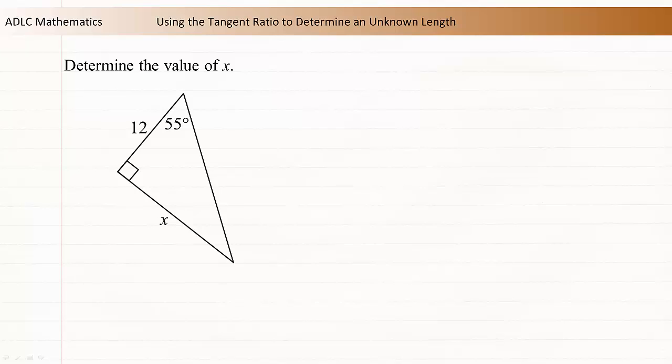Determine the value of x. The first thing to do is to determine the relationship between the sides and the given angle. The side of length 12 is adjacent to the 55 degree angle because it touches the angle and it is not the hypotenuse. Length x is opposite the 55 degree angle because neither end touches the 55 degree angle.